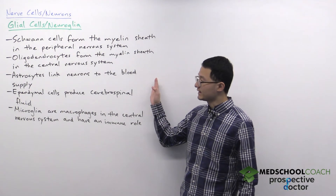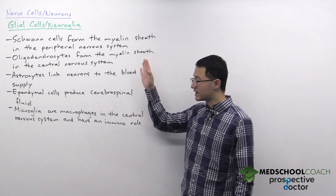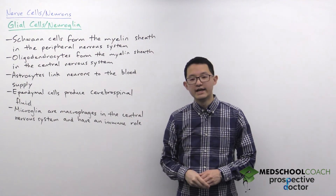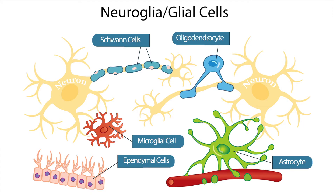For the MCAT, these are the major glial cells that you need to know, and there's a diagram here that summarizes their general roles. Schwann cells and oligodendrocytes are both involved in the formation of the myelin sheath around the axons. Schwann cells form the myelin sheath in the peripheral nervous system, whereas oligodendrocytes form the myelin sheath in the central nervous system.